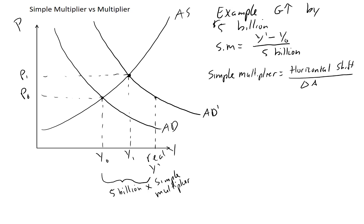But we know that equilibrium actually doesn't go up to y-prime because the price level is going to have to go up. Firms aren't willing to supply that much output at P0, so they're going to start to raise their prices. We're actually going to move along the AS curve until we get to this point, which we'll label P1 and y1. The distance between y0 and y1 is going to be equal to the multiplier times this change in A — or times five billion in this case.